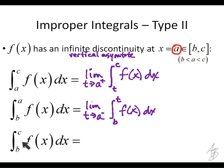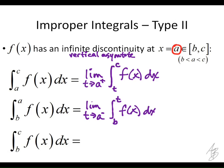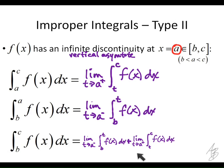The last case is trickier — when a is between b and c, meaning the infinite discontinuity is somewhere in the interior. In this case we have to write two limits: the limit as t approaches a from the left of the integral from b to t, plus the limit as t approaches a from the right of the integral from t to c. If we can evaluate each of these limits on each side, we add them together to get the total area.